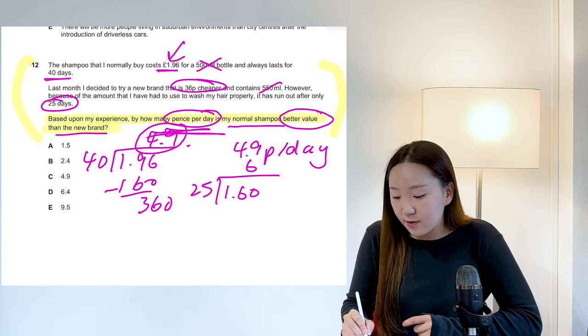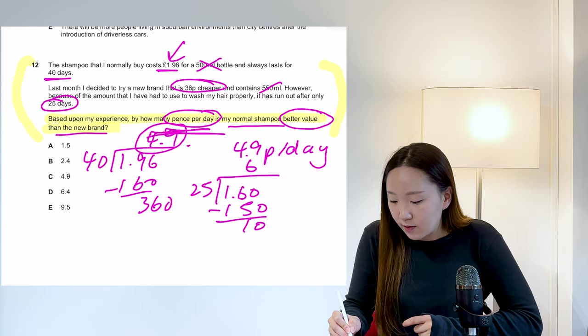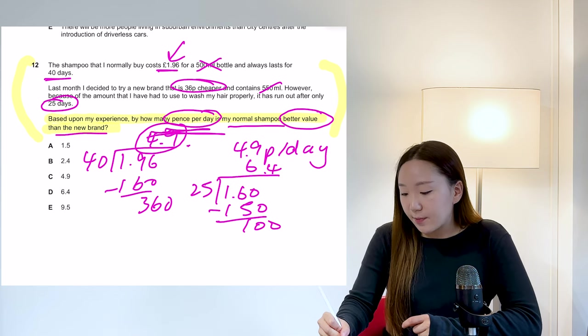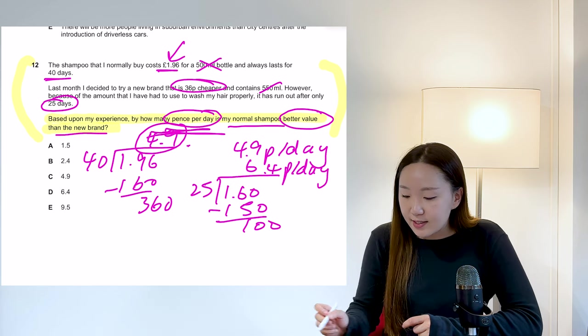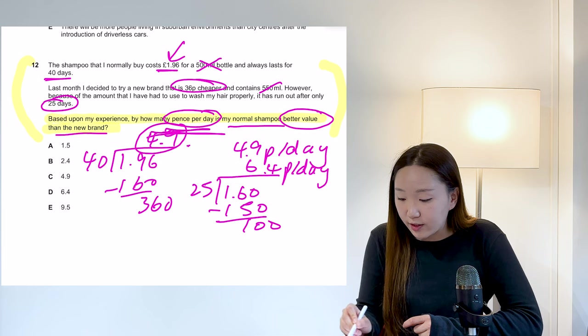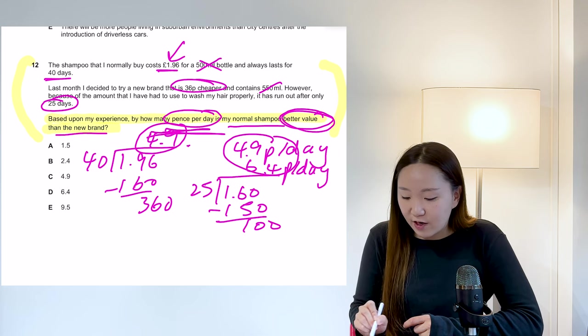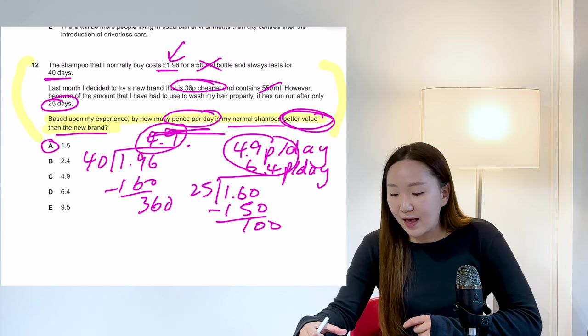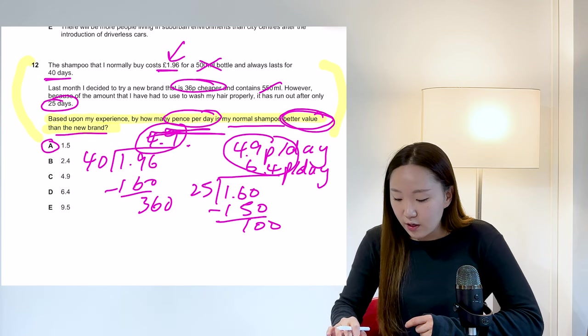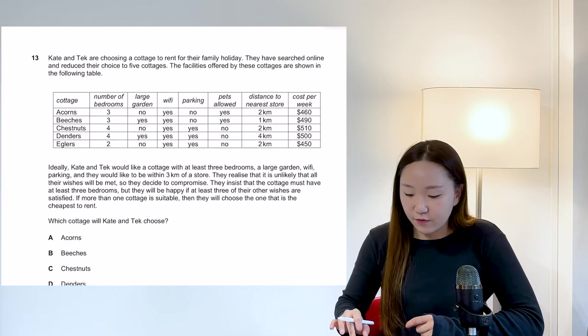So in this case, 160 minus 150, so 6.4 pence per day for the other shampoo and it's literally just which one is the better value one. So how much is a better value? This is a 1.5 pence difference, which is A. So try that. If you're struggling so far, then try reading the question first.